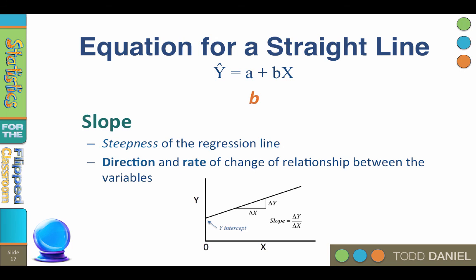Together, a and b, the y-intercept and the slope, define the regression equation using the method of least squares. The line of best fit is the line with the least amount of residual error in the sum of squares.